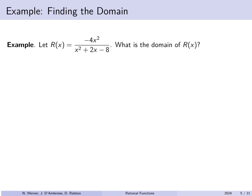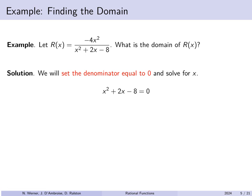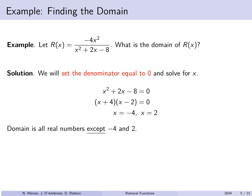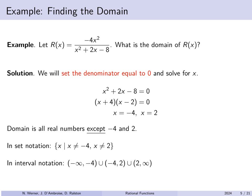Here's an example. Suppose R of x is equal to negative 4x squared over x squared plus 2x minus 8. What is the domain? We set the denominator equal to 0 to solve for those x's not in the domain. The denominator x squared plus 2x minus 8 factors as x plus 4 times x minus 2. For this product to be 0 means either x equals negative 4 or x equals 2. Therefore the domain is all numbers except those two values. As a set: all x's except negative 4 and 2; as intervals: negative infinity to negative 4, then negative 4 to 2, then 2 to infinity, excluding the endpoints.